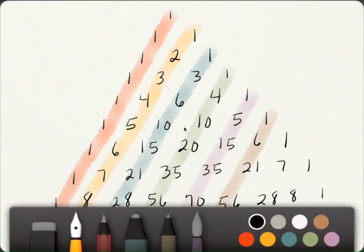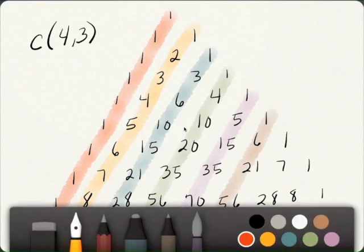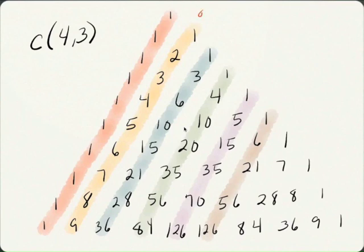Let's solve for a second solution. Combination 4, 3. So, we'll go down 4 rows, and over 3 numbers. So, the solution is 4.